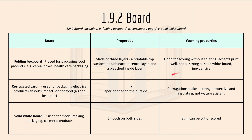Corrugated card or corrugated cardboard is used for packaging electrical products, and it absorbs impact or insulates hot food as it's a good insulator. Properties include paper bonded to the outside. Working properties include the corrugation makes it strong, it's protective and insulating, but it's not water resistant.